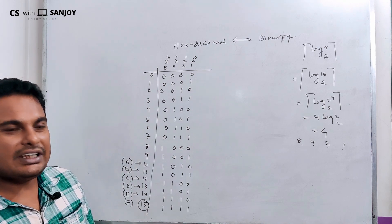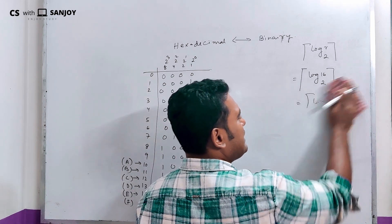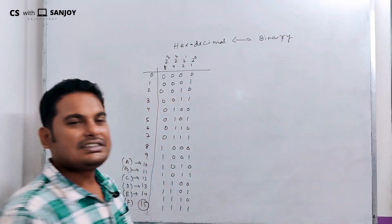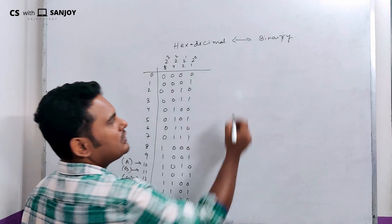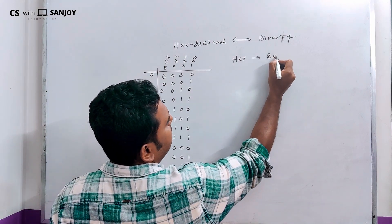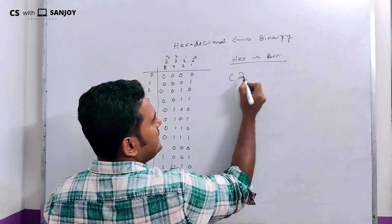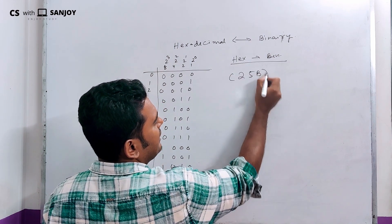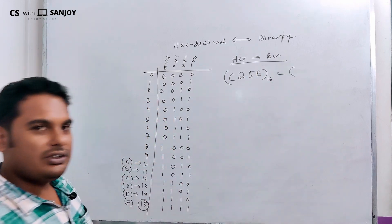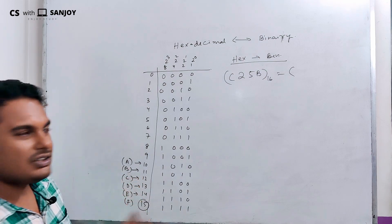Now let's see the hexadecimal to binary conversion. Our hexadecimal number is C25B. This is a hexadecimal number, where C, 2, 5, and B are the hexadecimal digits.